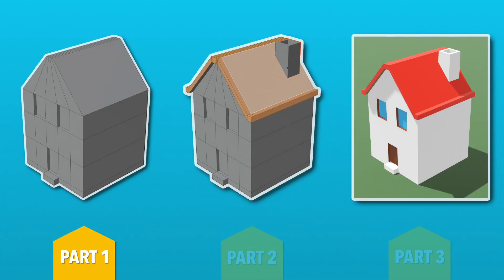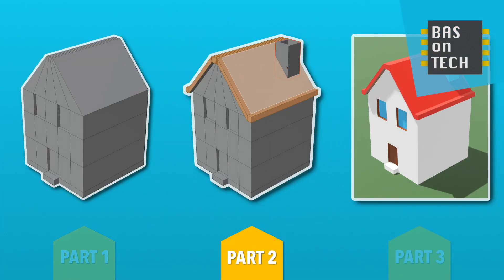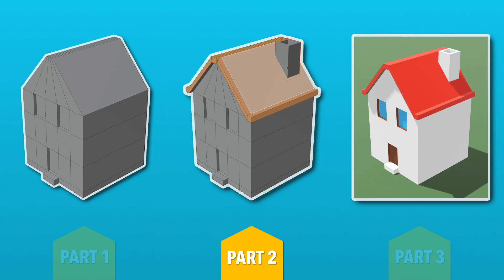In this second part of the house tutorial we're going to make the roof. I'm going to teach you how you can place your house on ground and we're going to make a chimney out of a new object.